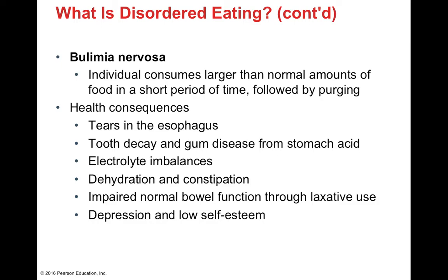Individuals suffering from bulimia nervosa typically consume large amounts of food in a very short period of time, followed by extreme purging events. Serious health consequences include tooth decay — often the first sign noticed by dentists, since these individuals often maintain normal weight. The stomach acid from vomiting causes extensive tooth decay, as well as tears in the esophagus and esophageal membranes. Severe electrolyte imbalances, dehydration, and constipation can occur. These individuals often use laxatives, suffering both vomiting and diarrhea, which can impair normal bowel function. Depression and self-esteem issues are common.